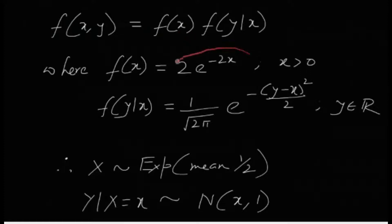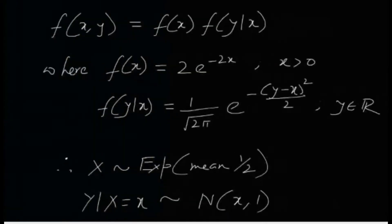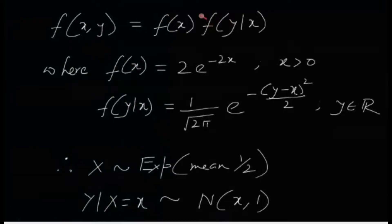Therefore, if x is this, and if y given x is this, that means X follows exponential distribution with mean half, and y given x equals x follows normal (x, 1). That means y given x follows normal distribution with mean x and standard deviation 1. That means that the original PDF, original joint PDF is actually nothing but a product in the form of this, in the disguise of a marginal times some conditional, where marginal is this and conditional is this.